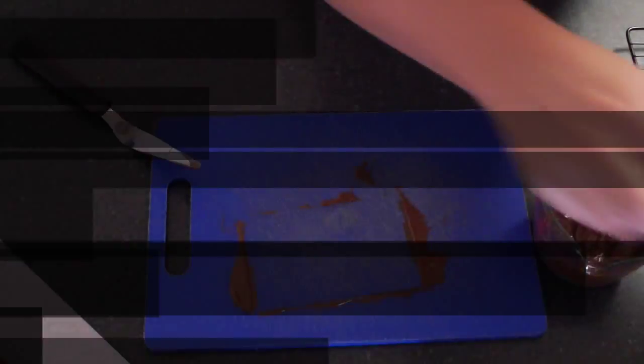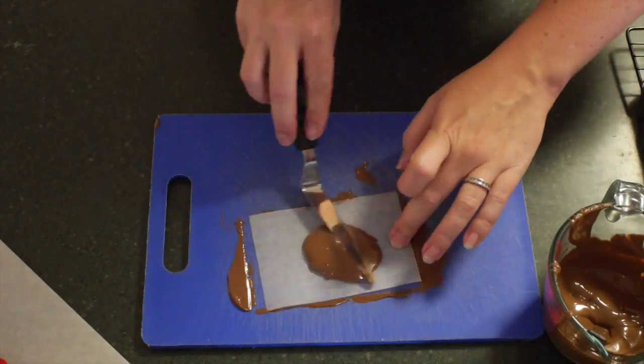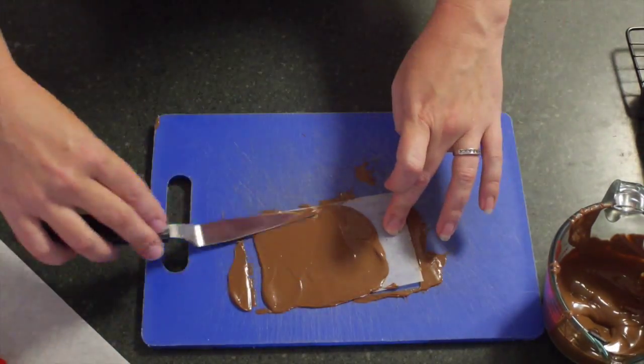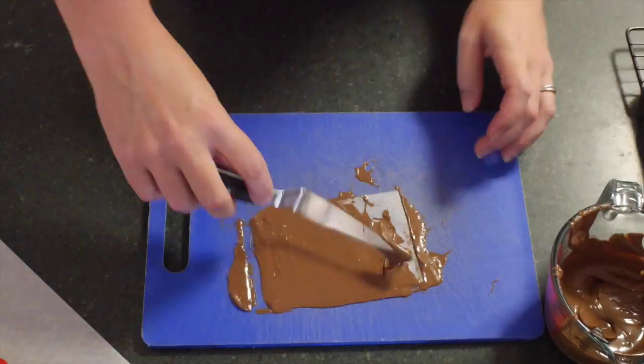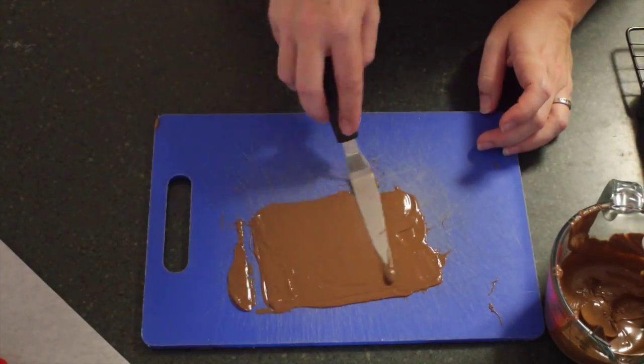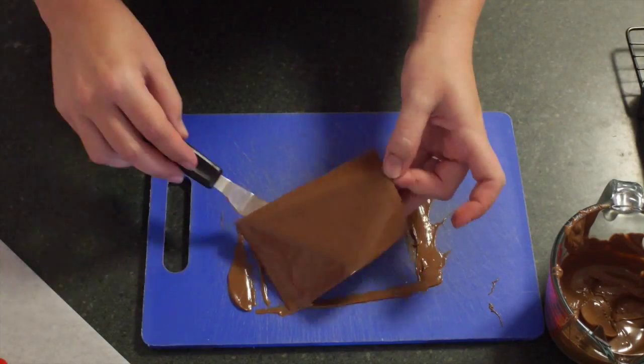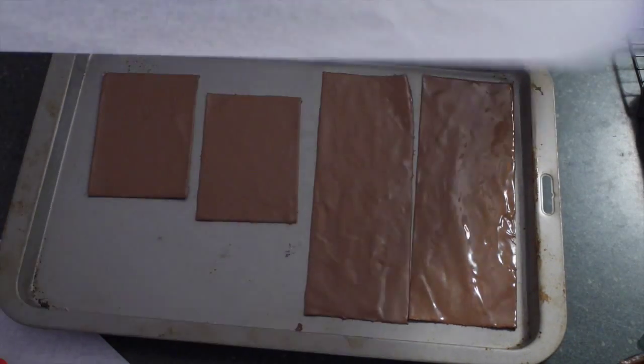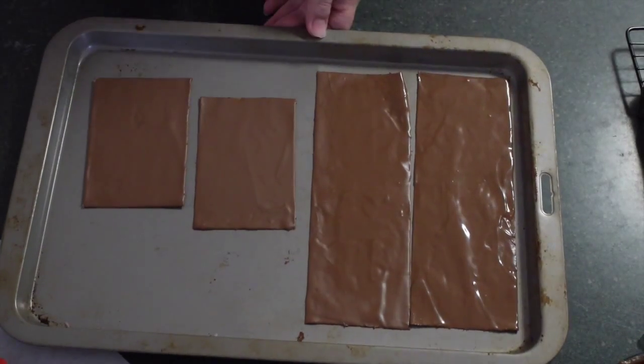So I am going to smooth that out so it is lovely and flat. I then place that on a baking tray and I will continue to do that on all of my pieces of baking paper until they're all covered. I have finished covering all of my pieces of baking paper.